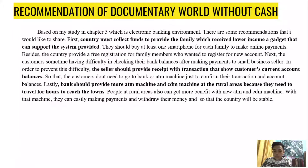For the recommendation, based on my study in Chapter 5 on electronic banking environment, there are some recommendations I would like to share. First, countries must collect funds to provide families with lower income a gadget that can support the provided system. They should buy at least one smartphone for each family to make online payments. Besides, the country should provide free registration for family members who want to register for a new account. Next, customers sometimes have difficulty checking their bank balance after making payment. In order to prevent this difficulty, sellers should provide receipts with transactions that show the customer's current account balance, so that the customer does not need to go to a bank or ATM machine just to confirm their transaction.